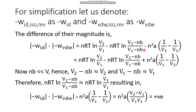The difference with the work done by the real gas is: nRT·ln(V₂/V₁) minus [nRT·ln((V₂ − nb)/(V₁ − nb)) + n²a·(1/V₂ − 1/V₁)]. When the signs are worked through, the plus signs become minus signs, and multiplying by −1 reverses the order, so n²a·(1/V₂ − 1/V₁) becomes +n²a·(1/V₁ − 1/V₂).